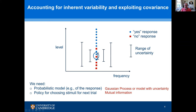Within Bayesian active learning, this is typically done using a Gaussian process to model the response. We assume that the responses come from a Gaussian distribution for any given level of the signal, but with a certain variability reflecting the randomness of the Gaussian process. The policy for choosing the stimulus for the next trial is based on the concept of mutual information.